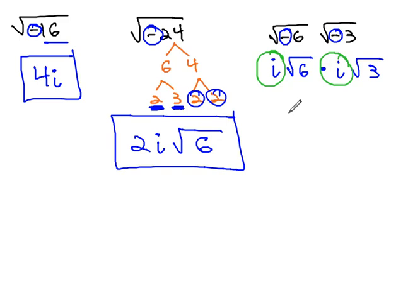However, we recall that i squared is equal to negative 1. Inside the square root, 6 times 3 is 18.